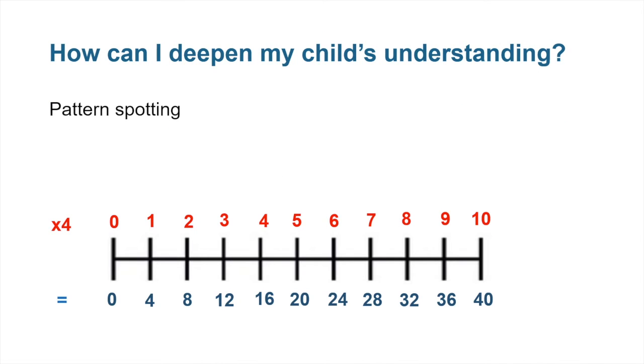So how can we do this? A great way to deepen children's understanding is to ask them to spot patterns. A key question that we often ask in maths lessons is what patterns did you spot? For example, on the number line below, children might spot the relationship between 3 times 4 equaling 12 and 6 times 4 equaling 24. 6 is double 3, just as 24 is double 12. Similar patterns could be spotted with 9 being triple 3 and 36 being triple 12.